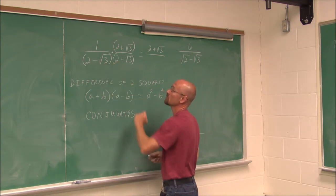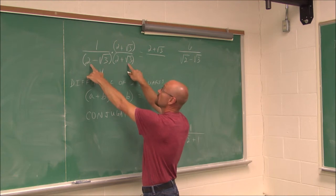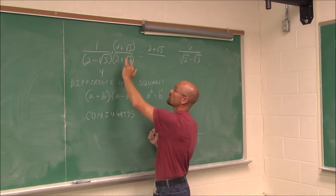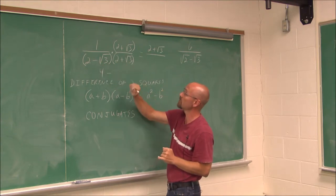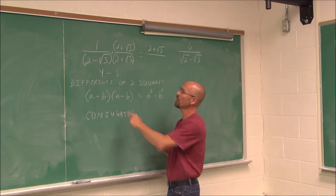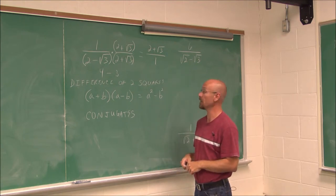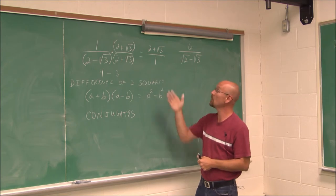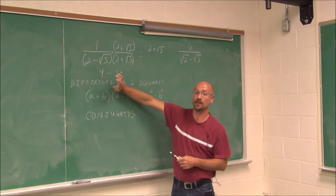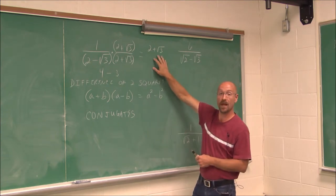When I FOIL the denominator: 2 times 2 gives 4. The middle terms are −2√3 and +2√3, which cancel out. Then −√3 times +√3 gives −(√3)² = −3. So the denominator is 4 − 3 = 1. Notice we no longer have a radical in our denominator. By using the conjugate, we eliminated it. Anything divided by 1 is just that value, so by rationalizing the denominator using its conjugate, we simplified to 2 + √3 — there's not even a fraction anymore.